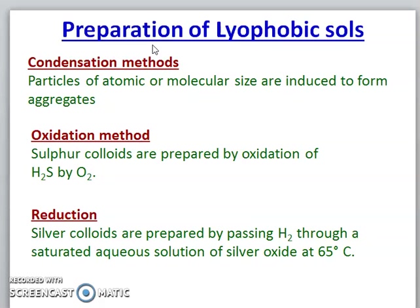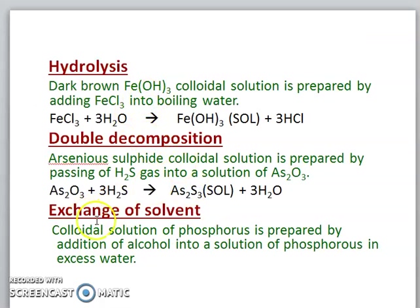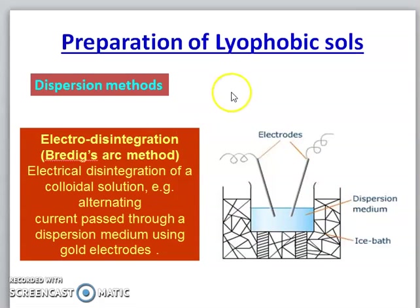In the condensation method, we induce small particles to aggregate and create colloidal-range particles. In the dispersion method, we have already learned about oxidation, reduction, hydrolysis, and double decomposition — all these come under chemical processes. We have also discussed the Bradic arc method, that is electro-disintegration.